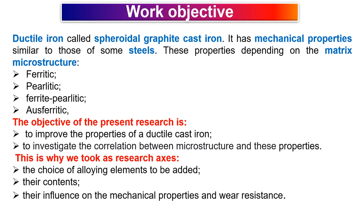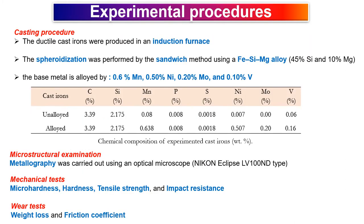The objective of the present research is to improve the properties of a ductile cast iron and to investigate the correlation between microstructures and these properties. The ductile irons were produced in an induction furnace. The chemical composition of the experimented cast iron is presented in this table.